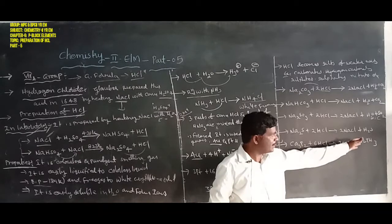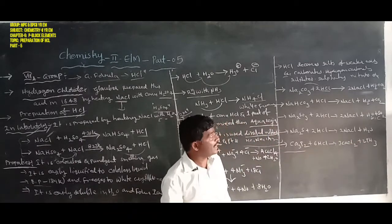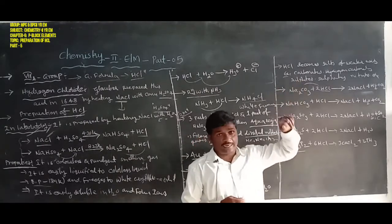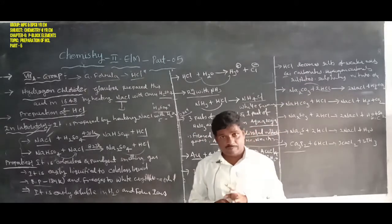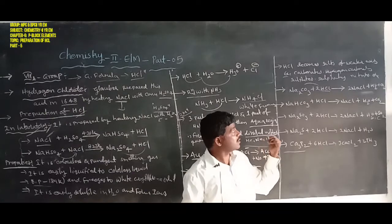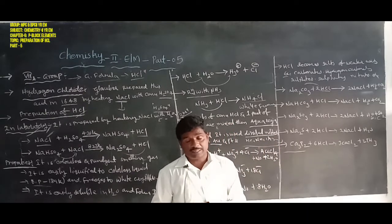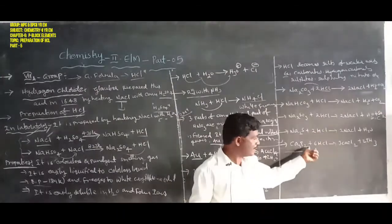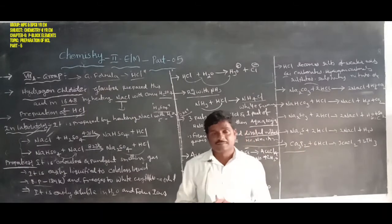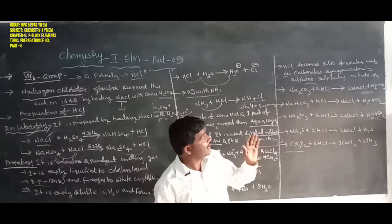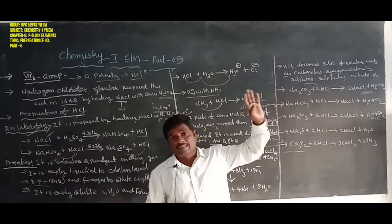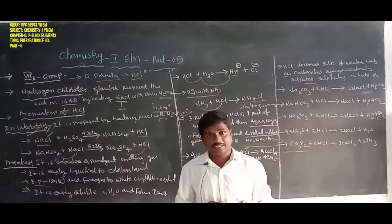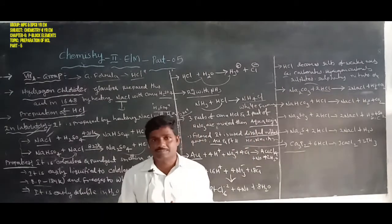Hydrochloric acid decomposes phosphide to phosphine (PH3). These are the salts of weaker acids decomposed by hydrochloric acid: carbonates (e.g., sodium carbonate), bicarbonates (e.g., sodium bicarbonate), sulfites, sulfides (e.g., sodium sulfide), and phosphides (e.g., calcium phosphide, Ca3P2). Also nitrates. That is the decomposition of weaker acid salts.